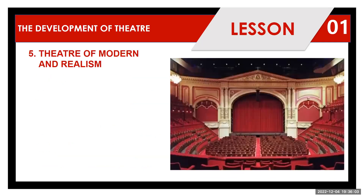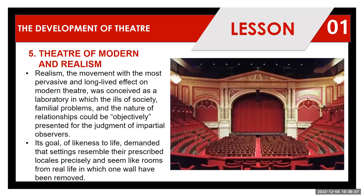In realism, this is a movement with the most pervasive and long-lived effect on modern theatre. It was conceived as a laboratory in which the ills of society, familiar problems, and the nature of relationships could be objectively presented for the judgment of impartial observers. Its goal of likeness to life demanded that settings resemble their prescribed locales precisely and seem like rooms from real life in which one wall had been removed, making staging more complex and precise.